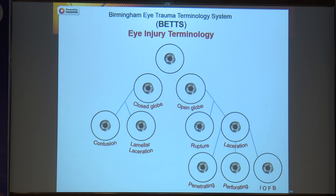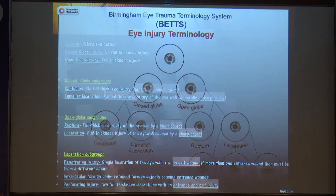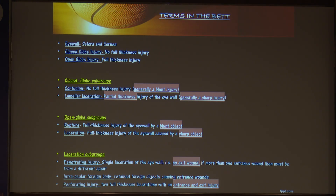In the BEDS classification, the broader categories are closed and open globe injuries. Closed globe injuries include contusion and lamellar lacerations. In contusion it is generally a blunt injury, and in lamellar it is a partial thickness injury, generally with a sharp object. Closed globe is defined by no full thickness injury, while open globe involves a full thickness injury.